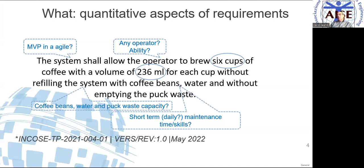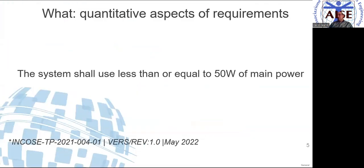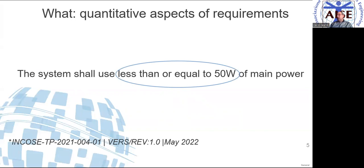Let's use another requirement from the guide: 'The system shall use less than or equal to 50 watts of main power.' What is the explicit quantitative aspect? It's 'less than or equal to.' We'll come back to this expression in a few slides, because it's necessary to pay a lot of attention to this type of statement.